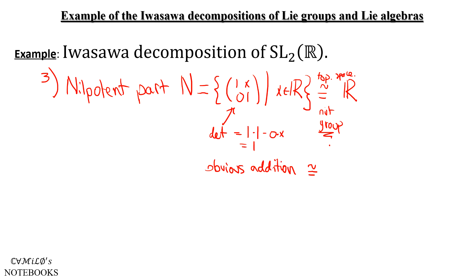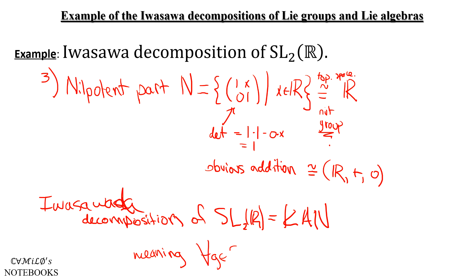And I think I messed up here, it will be isomorphic to ℝ as a group with addition, clearly. So the Iwasawa decomposition of SL₂(ℝ) here will be a way of expressing SL₂(ℝ) as K times A times N. Meaning that every element in SL₂(ℝ) will be written as a product of a matrix from K times a matrix from A times a matrix from N.